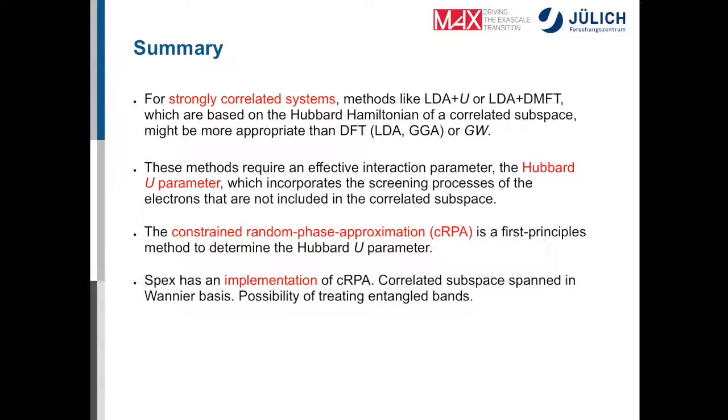So I've shown you for strongly correlated systems you might want to go beyond DFT, GW, to include strong correlations. For example you might want to use LDA plus U, LDA plus DMFT, Hubbard one or what have you and all of these methods are based on the Hubbard Hamiltonian, Hubbard model, which requires a Hubbard U parameter. And this Hubbard U parameter can be calculated from first principles using the constrained random phase approximation. And SPEX has an implementation of this cRPA. The correlated subspace is then spanned in the Wannier basis and also we have the possibility of treating entangled bands. Thank you.